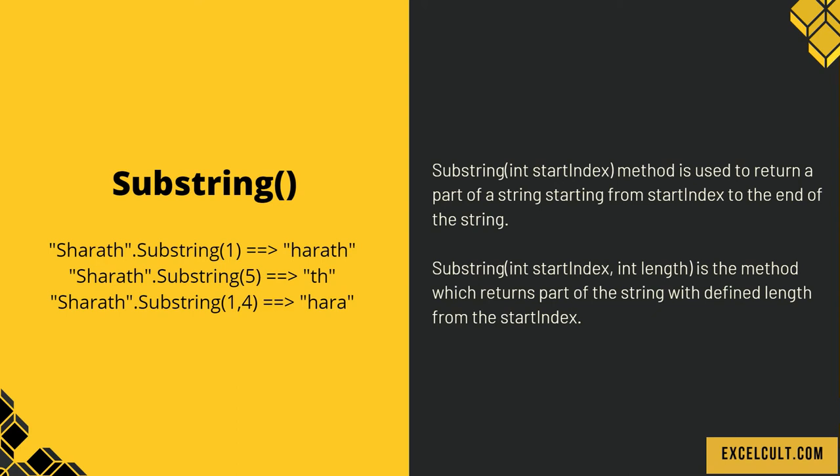Then comes substring. When it takes only one argument, substring returns a part of a string starting from the given start index to the end of the string. For example, 'SHERATH'.substring(1) — the start index is 1, and H starts at index 1, so the result will be 'HARATH'. In the second example, 'SHERATH'.substring(5) — T is at index 5, so the result is 'TH'.